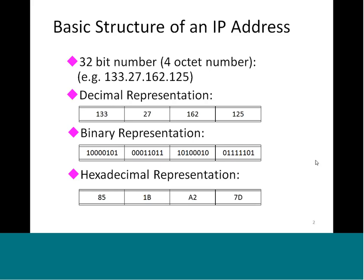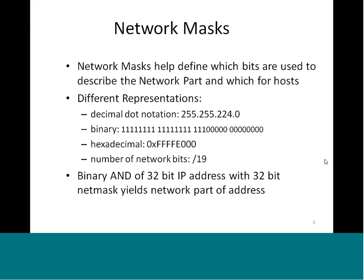If you have a license for any software, the software vendor may ask you for the hostname where you are hosting the license in the form of a hexadecimal representation. We also saw the use of a network mask, which is used to define which bits describe the network part and which are used for the host. A simple notation would be 255.255.224.0 — in this case 224 represents the first 3 bits of the third octet, so the number of network bits is 19 and the remaining bits are assigned to hosts.